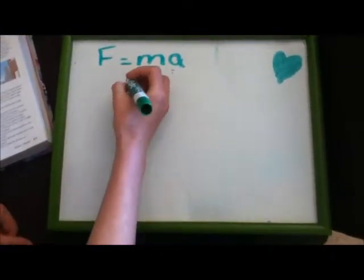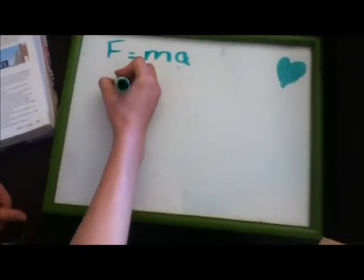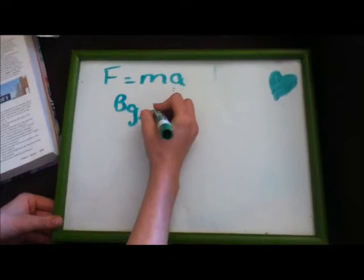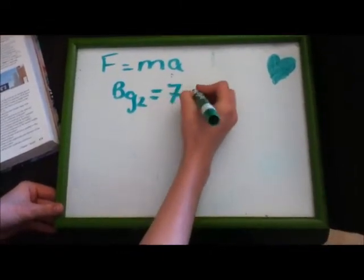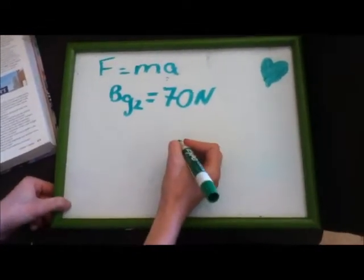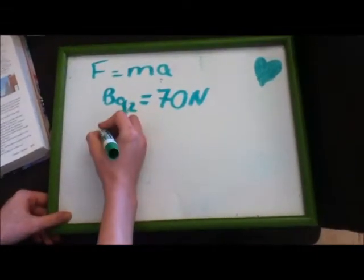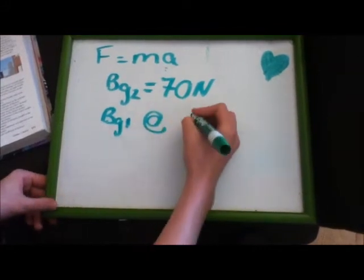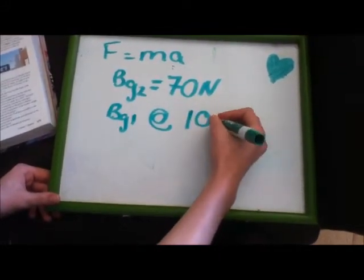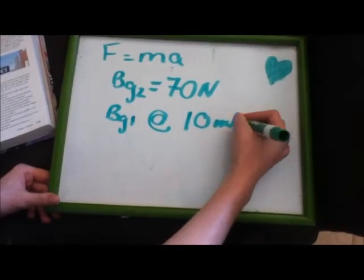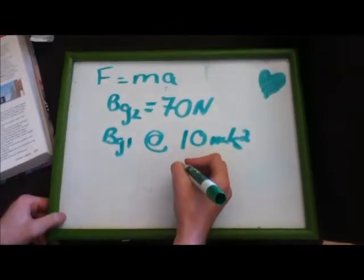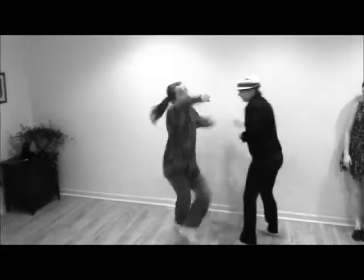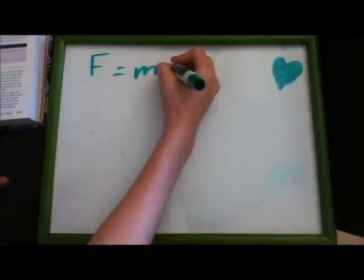And if bad guy number 2, if his mass is equal to 70 newtons and he punches bad guy number 1 at a rate of 10 meters per second squared, then the force of his punch would be 700 newtons. Equals mass times acceleration.